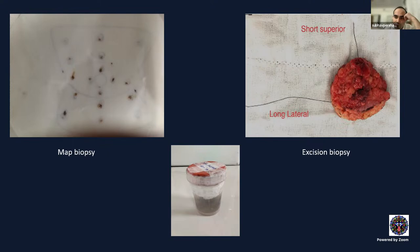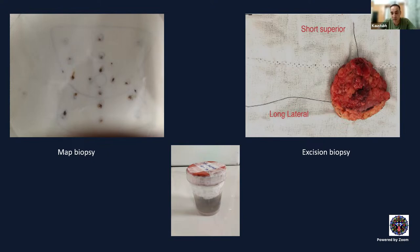The ideal amount of formalin is in a ratio of 1:10 to 1:20 — that is, volume of specimen to volume of preservative. For large specimens like exenteration or an eyeball, a 1:2 or 1:3 ratio may suffice, but the specimen must always be completely immersed in the preservative. This picture shows orientation of a specimen tissue excised for ocular surface neoplasm, with a diagram indicating the site.